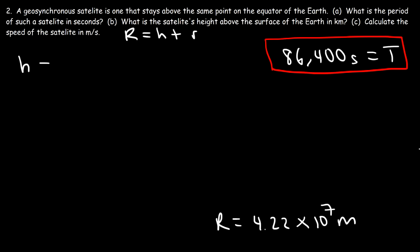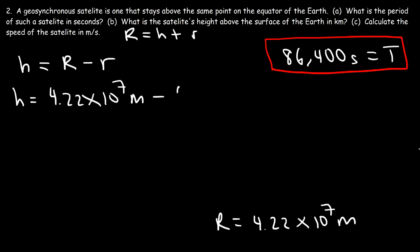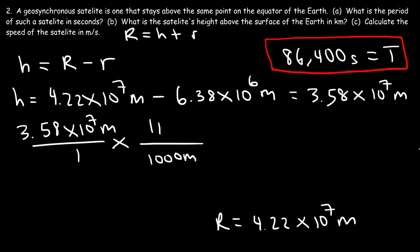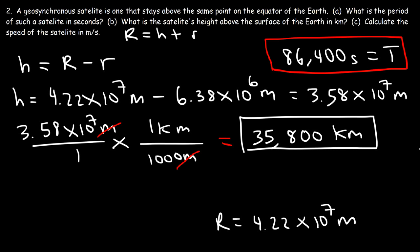We need to find the height, so the height equals the orbital radius minus the radius of the Earth: 4.22 times 10 to the 7 minus 6.38 times 10 to the 6 meters. This equals 3.58 times 10 to the 7 meters. Converting to kilometers — there are 1,000 meters per kilometer — we divide by 1,000 to get 35,800 kilometers. That's how high this geosynchronous satellite is above the surface of the Earth.